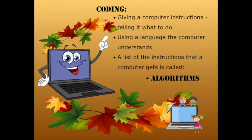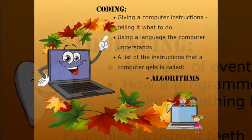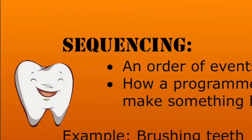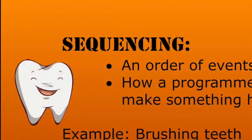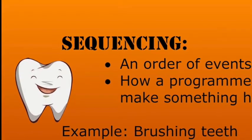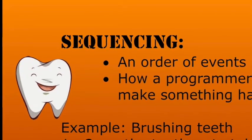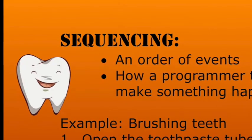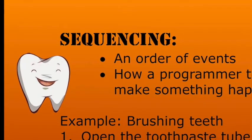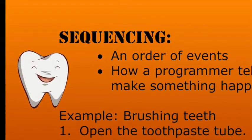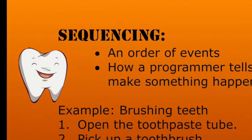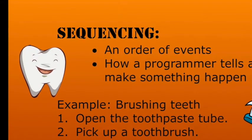That's a big word, isn't it? Can you say algorithms? Very good! One type of an algorithm is sequencing. Sequencing is putting something in proper order. It's the order that a programmer tells a computer so that it can make something happen.